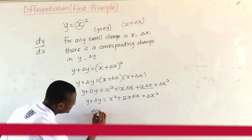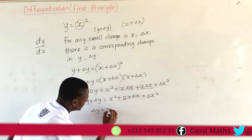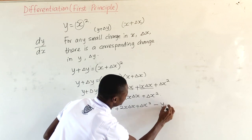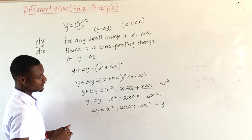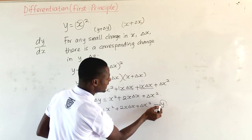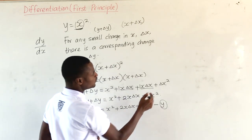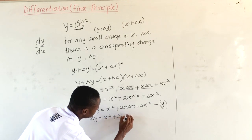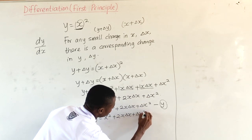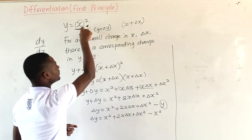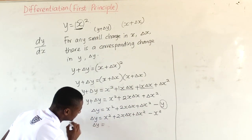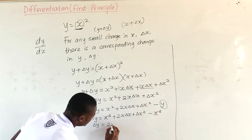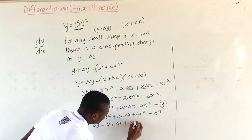Then, our change in y will be equal to x squared plus 2x delta x plus delta x squared minus y. We've made change in y the subject. But also note that y is equal to x squared. So we substitute, giving change in y equal to x squared plus 2x delta x plus delta x squared minus x squared. The x squared terms cancel, leaving us with 2x delta x plus delta x squared.